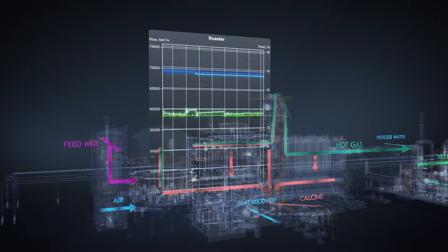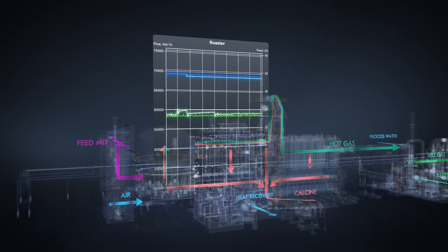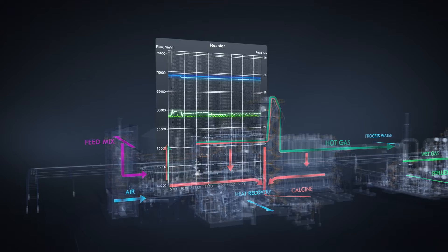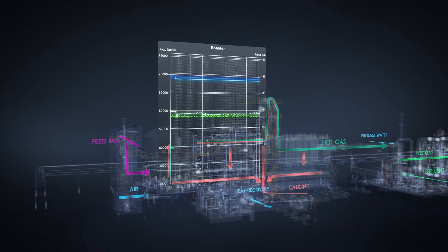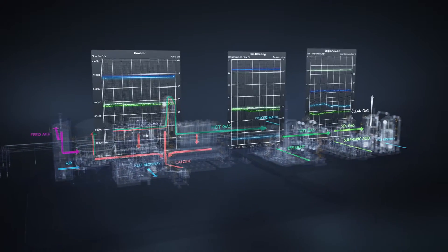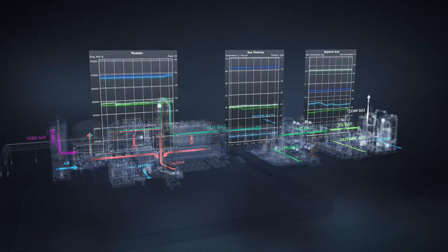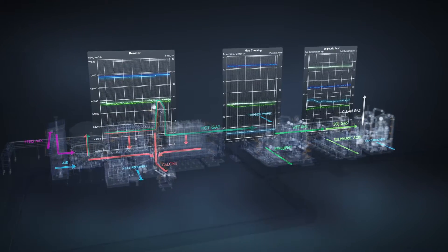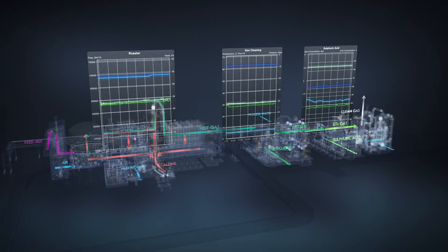The Fluid Bed Optimizer automatically monitors all relevant process parameters in real-time, whilst considering how they affect each other. Key parameters of the downstream process steps, such as the wet gas cleaning and sulfuric acid plant, are also utilized in the Process Optimizer tool.